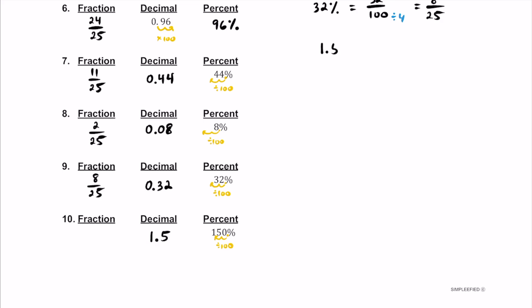If you read this properly, this is 1 and 5 tenths. So as a fraction, it's going to be 1 and 5 tenths — write it as a mixed number. Then we can divide the fractional part by 5 top and bottom. If we do that, we're going to have 1 and a half. And that'll be our most simplified fraction.